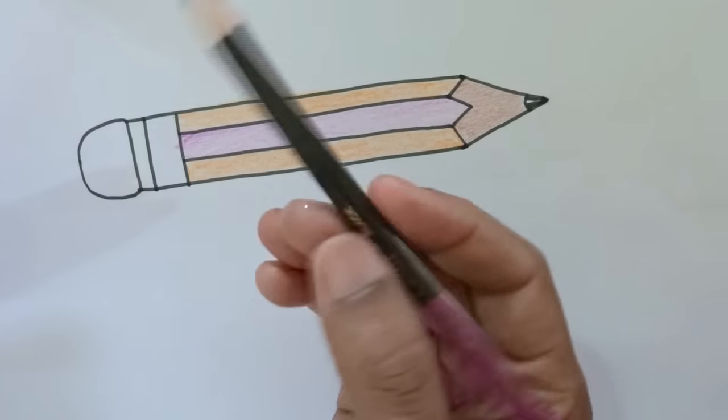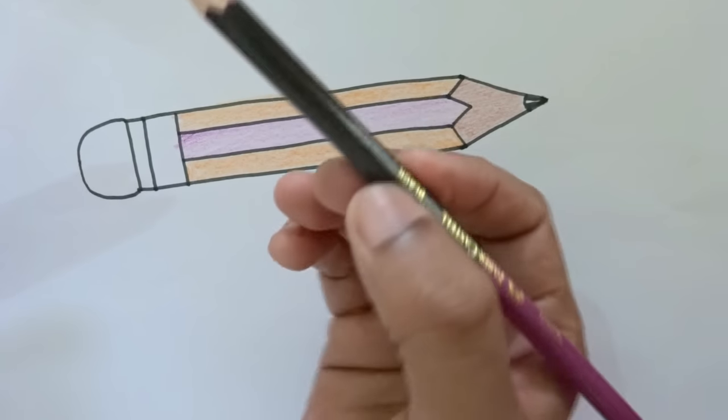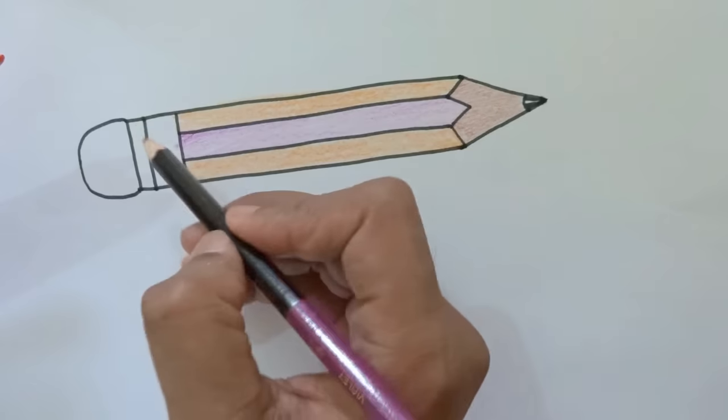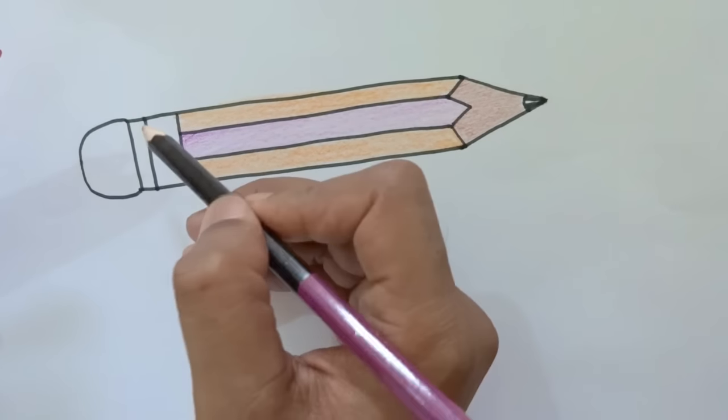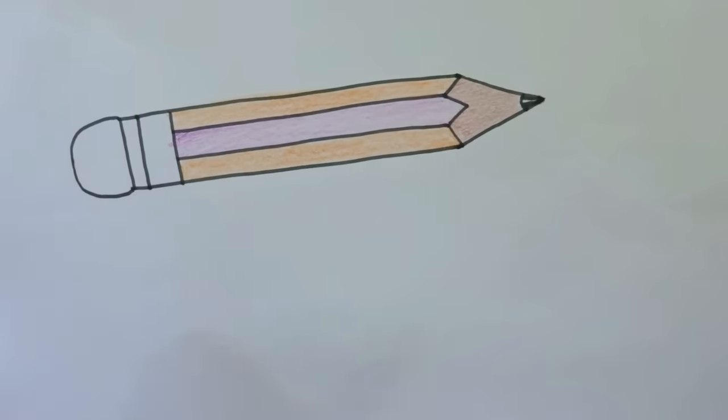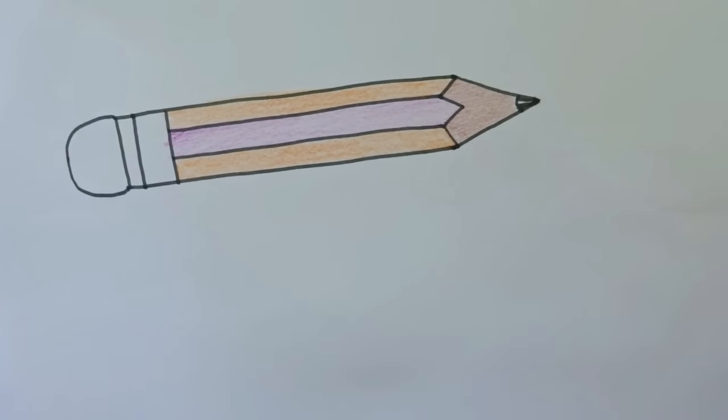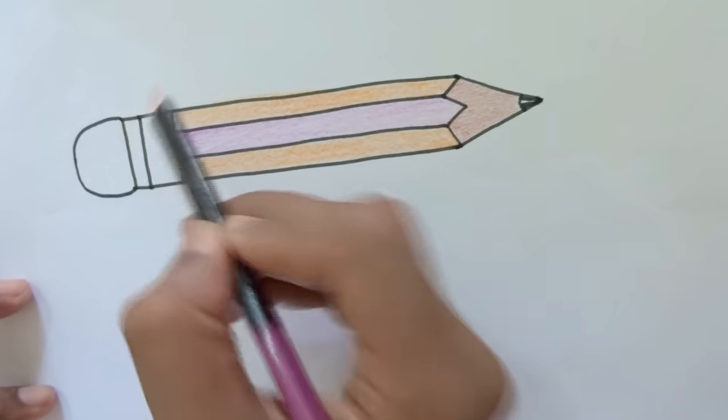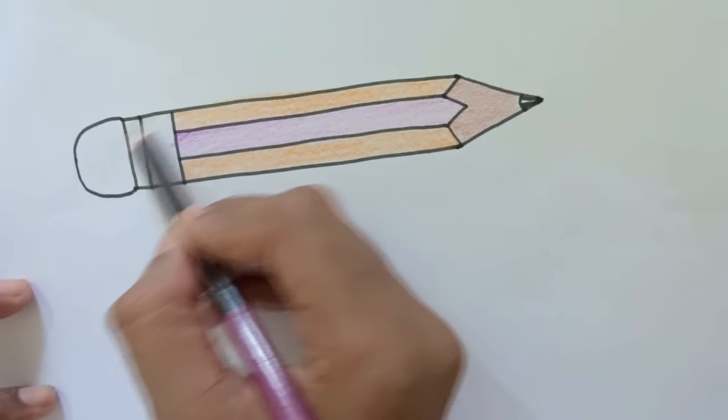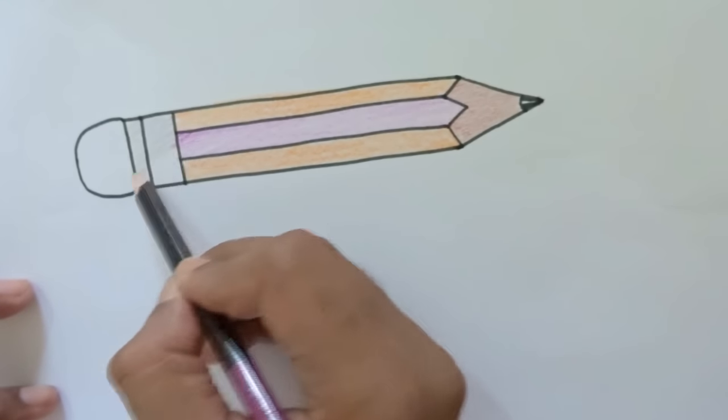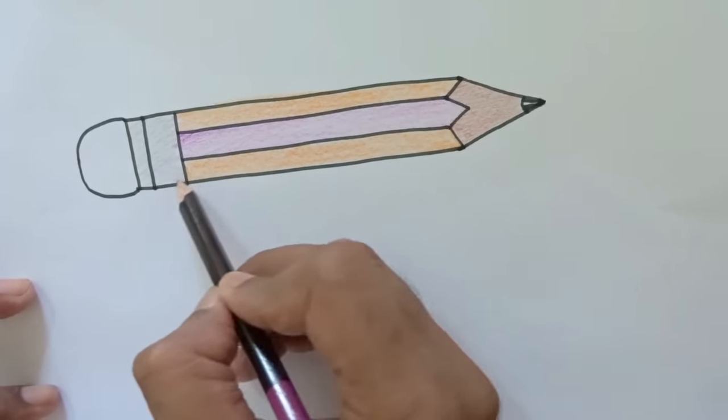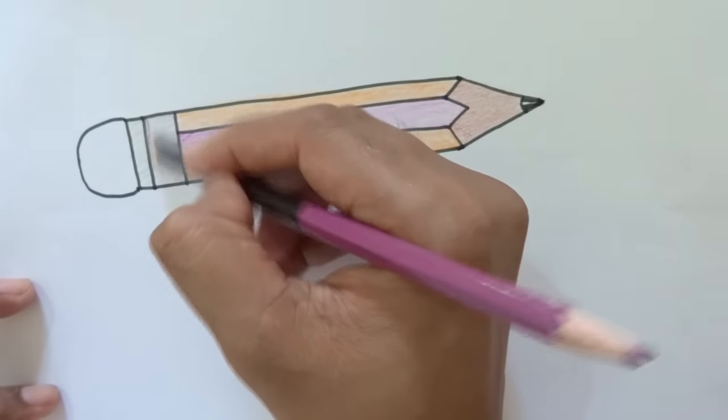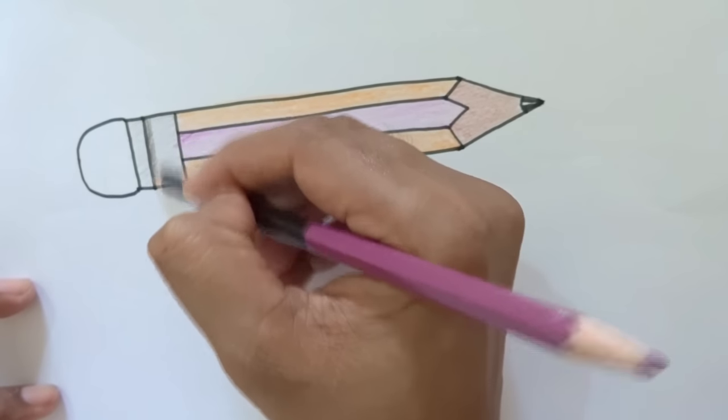Now gray color we need, but we don't have, so this is black color. To bring the gray color, what we'll do, we'll not press more. Sorry for the sound. We'll do lighten, see, like this. And in between you can press so that the dark color will come over here.